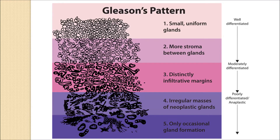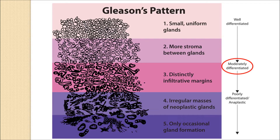Gleason was a pathologist who, instead of three groups, came up with five patterns. Gleason pattern 1 was very well differentiated; patterns 2 and 3 became more moderately differentiated; and Gleason 4 and 5 were more poorly differentiated or abnormal.